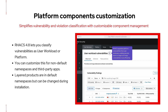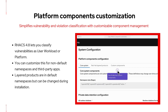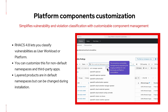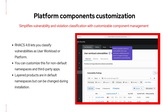ACS 4.8 also introduces separation between user workloads and platform. User workloads include the apps and images you deploy and manage, while platform covers the underlying infrastructure, operators, and third-party services. This helps teams focus on what they're responsible for. By default, ACS identifies core system components as platform, but starting in ACS 4.8 you can view and customize these definitions. For example, if you installed Red Hat products in non-default namespaces, you can update the definitions accordingly. You can also tag third-party applications as platform components to keep the user workload view focused on what your development teams need to address.